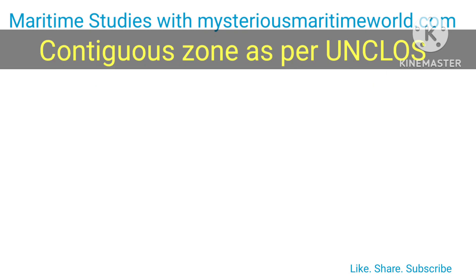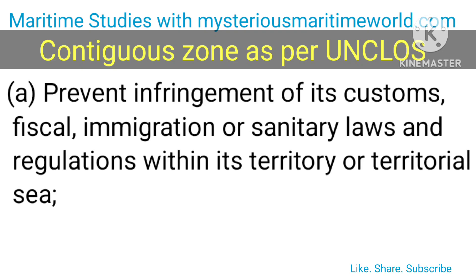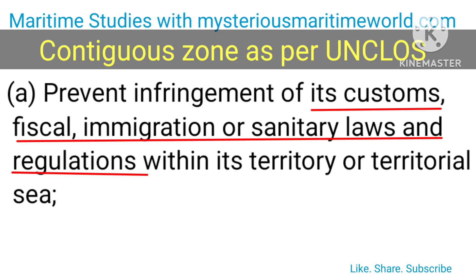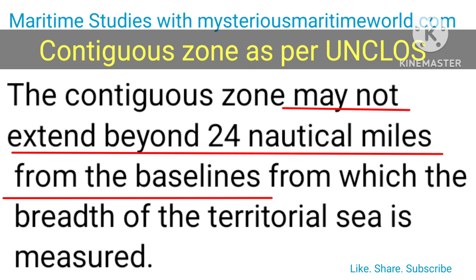Contiguous zone as per UNCLOS: In a zone contiguous to its territorial sea, described as the contiguous zone, the coastal state may exercise control necessary to: (A) prevent infringement of its customs, fiscal, immigration or sanitary laws and regulations within its territory or territorial sea; and (B) punish infringement of the above laws and regulations committed within its territory or territorial sea. The contiguous zone may not extend beyond 24 nautical miles from the baselines from which the breadth of the territorial sea is measured.